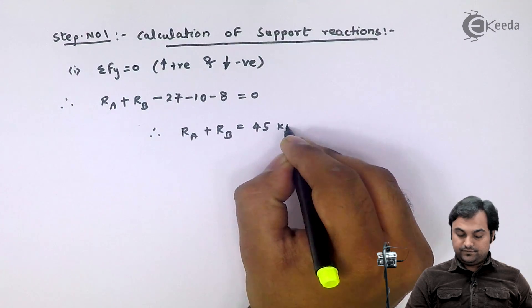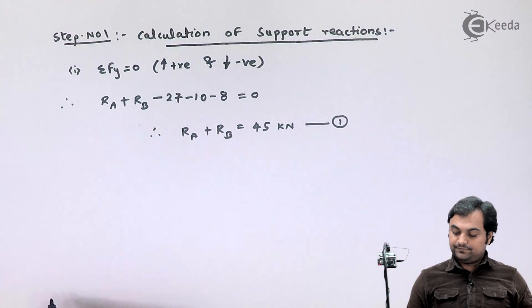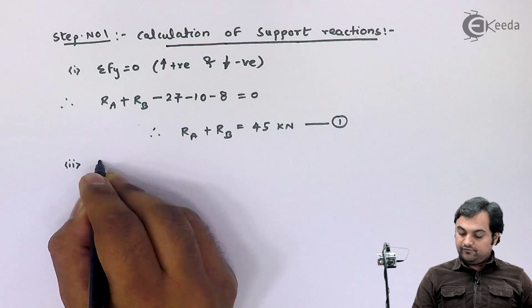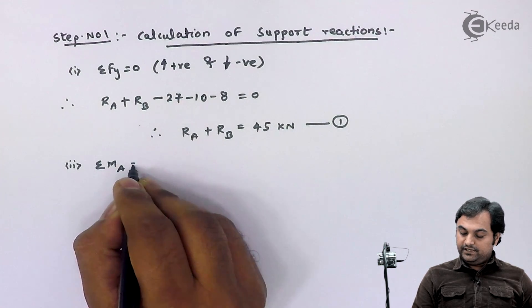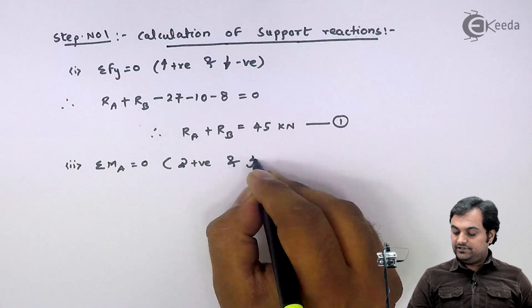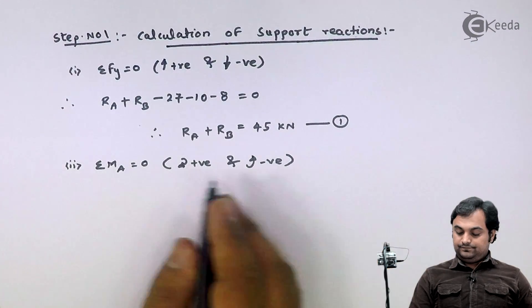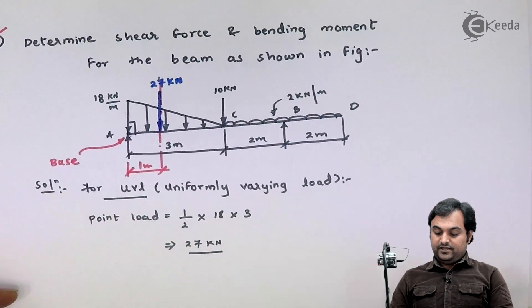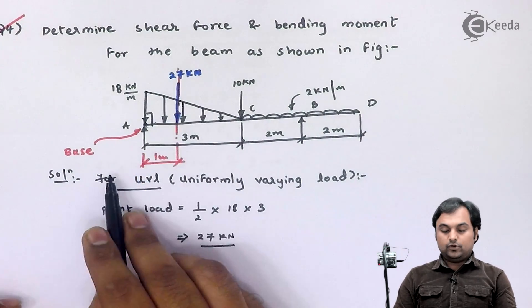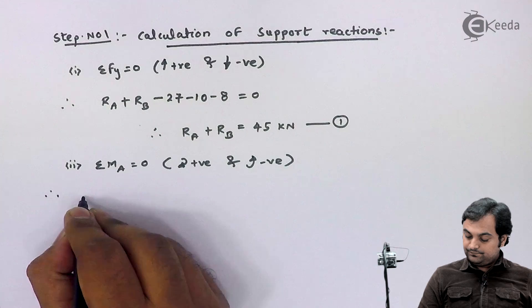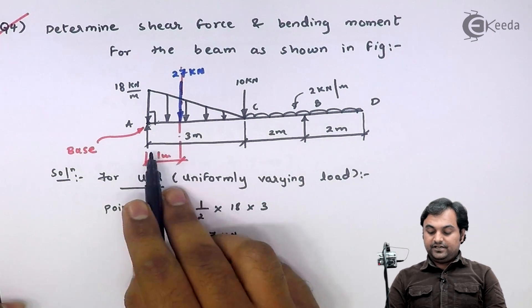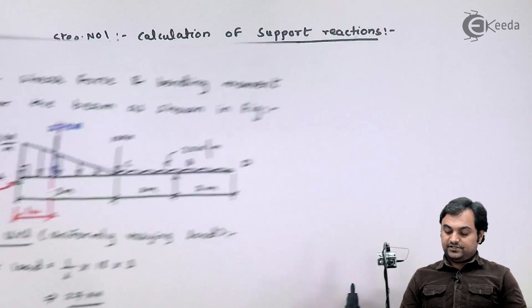Next, taking the summation of moments about point A equal to zero, with clockwise moments positive and anticlockwise moments negative. The 27 kilonewton load is at 1 meter from A and clockwise, so plus 27 times 1. The 10 kilonewton load is at 3 meters from A, so plus 10 times 3.